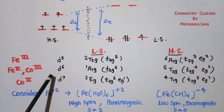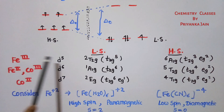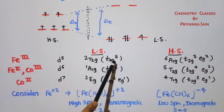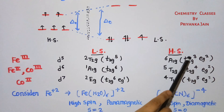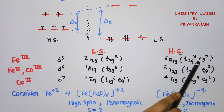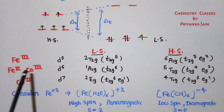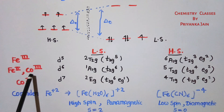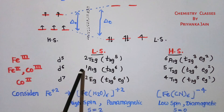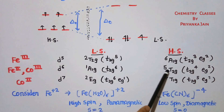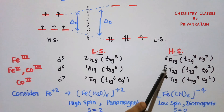Spin crossover is most common in d5, d6, and d7 complexes. For d5 (e.g., Fe³⁺), the low spin state has five electrons in t2g (²T2g ground term) and the high spin state has three in t2g and two in eg (⁶A1g ground term). For d6 (e.g., Fe²⁺ and Co³⁺), the low spin state has six electrons in t2g (¹A1g) while the high spin state has four in t2g and two in eg (⁵T2g).